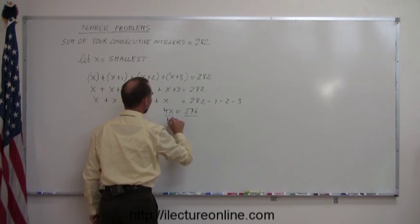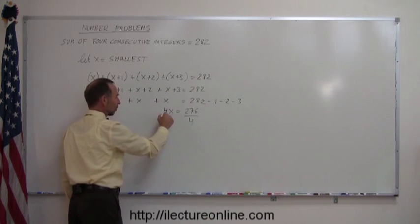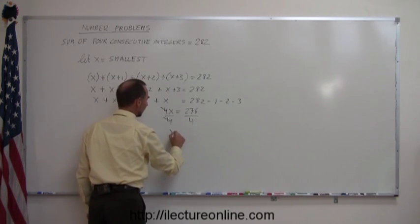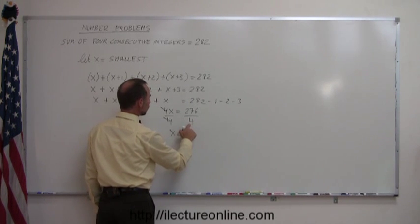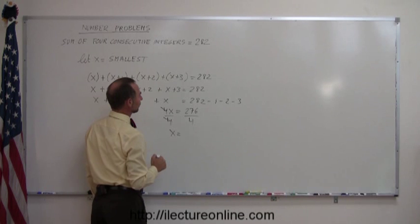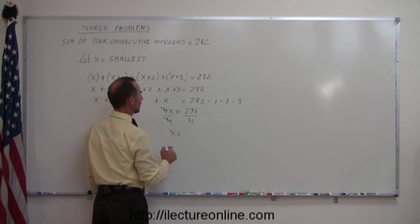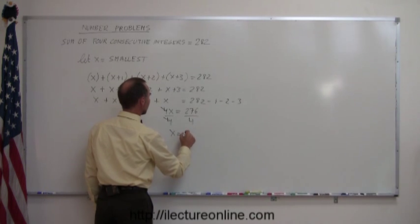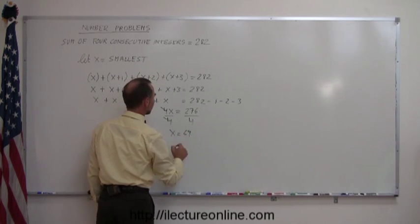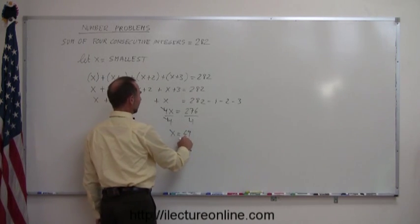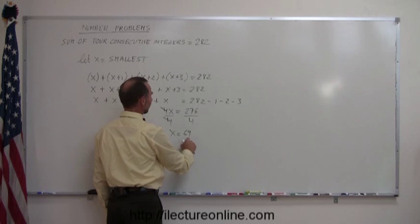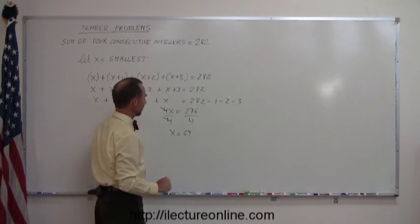And then we divide both sides of the equation by the numerical coefficient in front of the x, so we get x is equal to, that would be 4 goes into 280, 260, that would be 70, 70, 80, 69. Is that right? 4 times 6 is 240, 4 times 9 is 36, that's 276. Wow, yes.